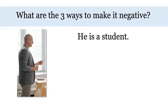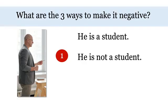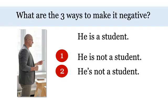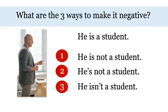You try. What are the three ways to make it negative? The sentence is: 'He is a student.' But no — he is a teacher. The first way: just add 'not' — 'he is not a student.' The second way: make a contraction with 'he' and 'is' — 'he's not a student.' The third way: make a contraction with 'is' and 'not' — 'he isn't a student.' Notice, in all three ways, we still have 'is' and 'not.'